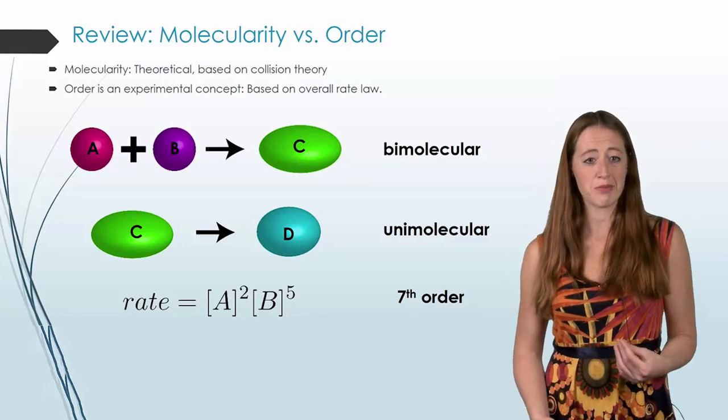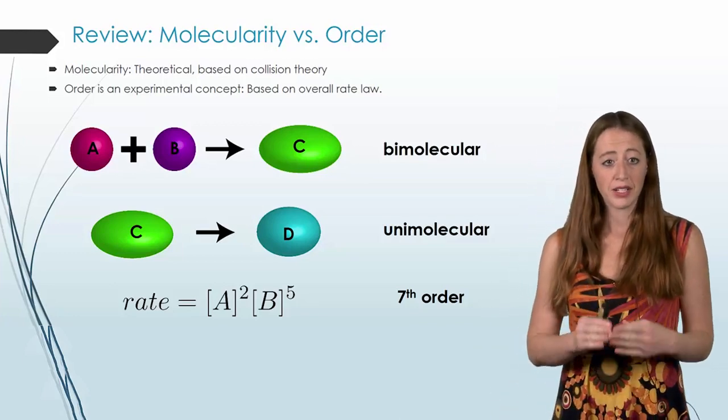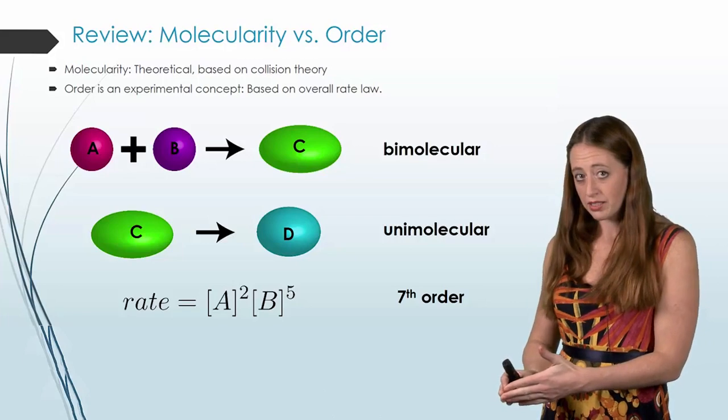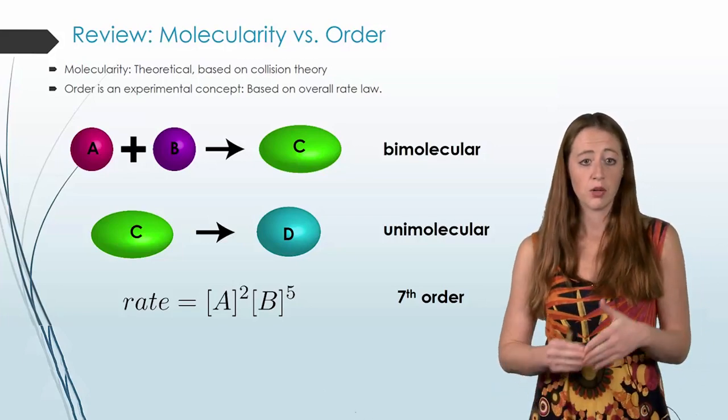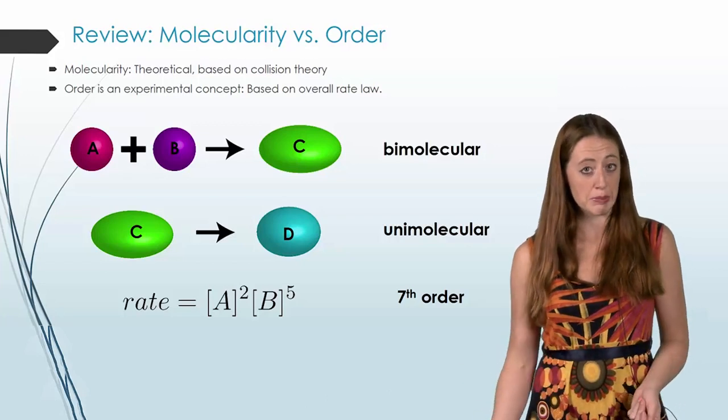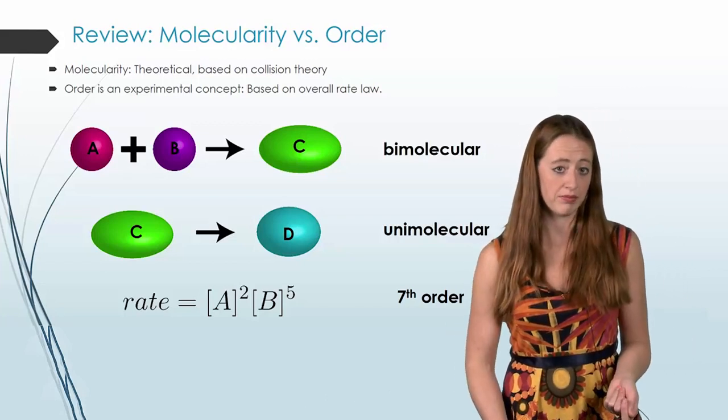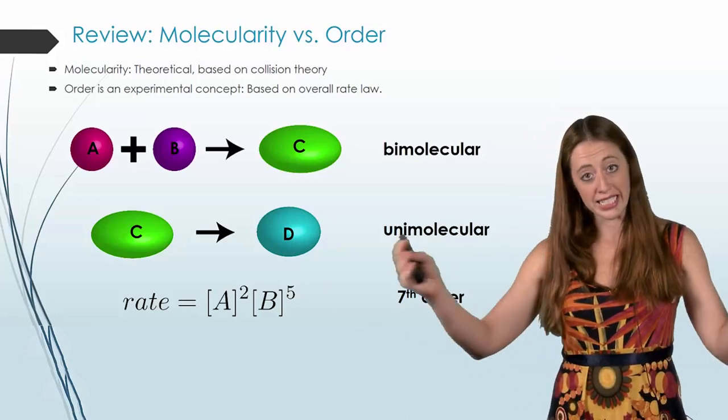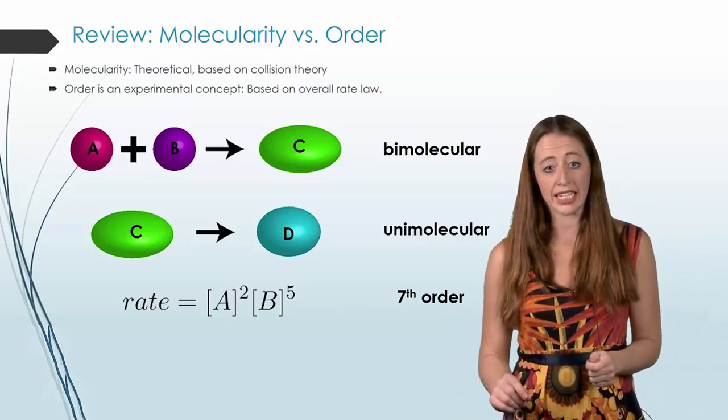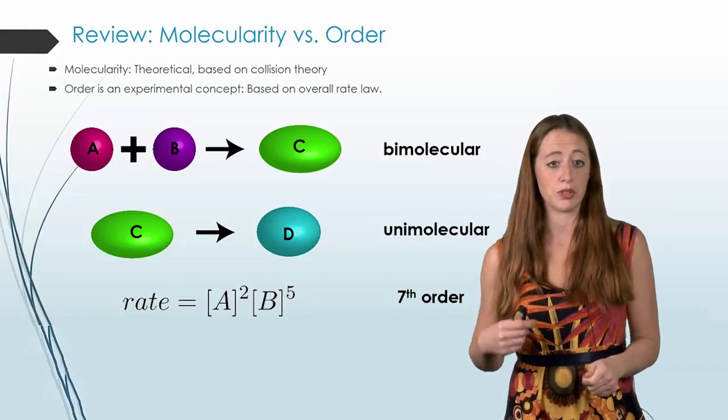So one last time wrap up. We have molecularity versus order. Molecularity is a theoretical concept based on collision theory. While order is an experimentally determined rate law. And rate laws are going to be for the entire reaction. While molecularity is for each individual step.